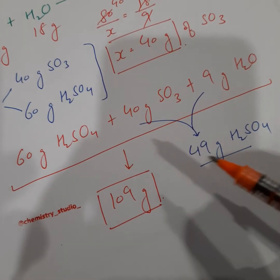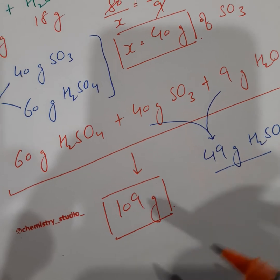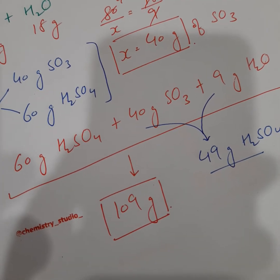So the total mass of sulfuric acid is going to be 60 grams plus 49 grams is equal to 109 grams. I hope you are getting it now.